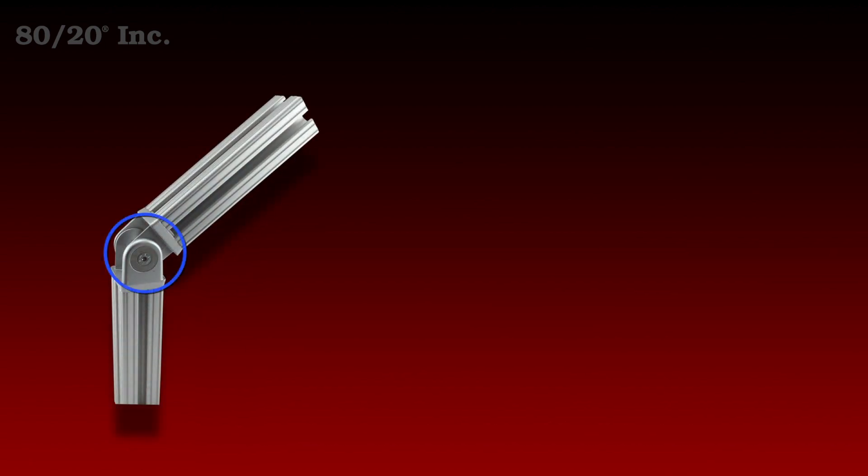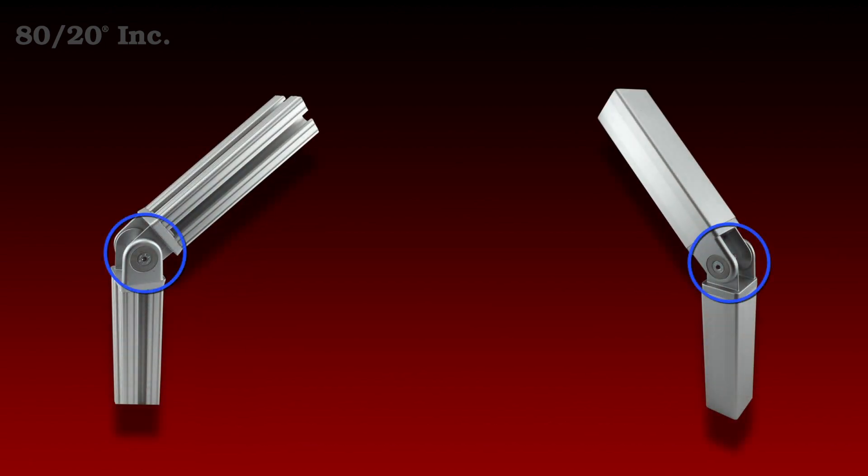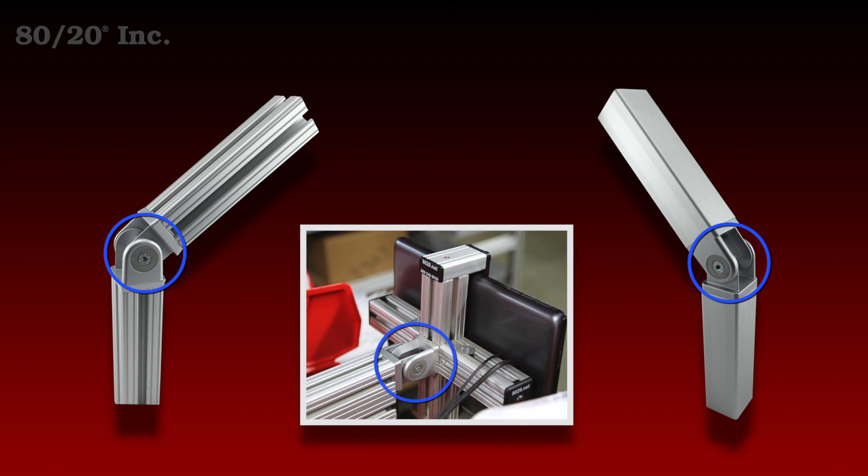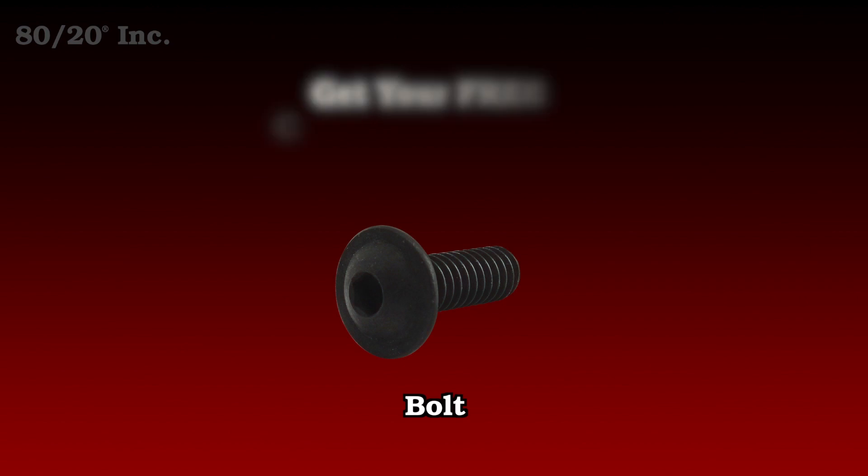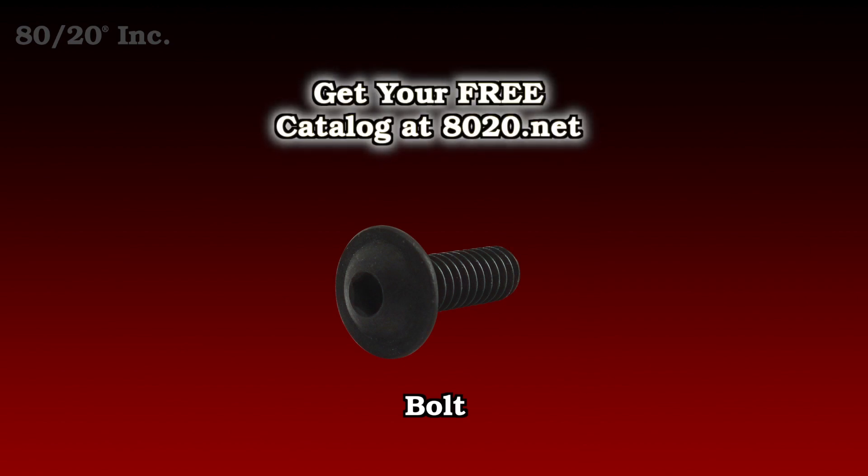It's easy to install and is available in both fractional, metric, and compatible across a wide range of profile series. Now one thing you'll want to keep in mind with the pivot joint is it's a stand alone part and it's going to need a bolt assembly to install.